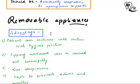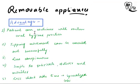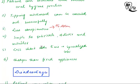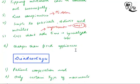Removable appliances have certain advantages. The patient can continue with routine oral hygiene practices — for example, the patient can remove the appliance, brush their teeth, and put it back. Tipping movement can be carried out successfully and the appliance is less conspicuous. They are simple to fabricate, deliver, and monitor, requiring less chairside time because you just need to take an impression and fabricate on the cast. They are cheaper than fixed appliances.